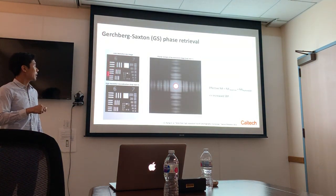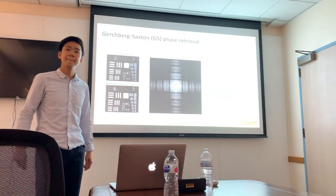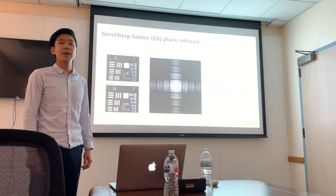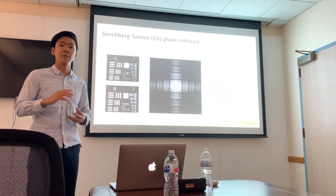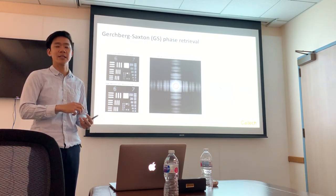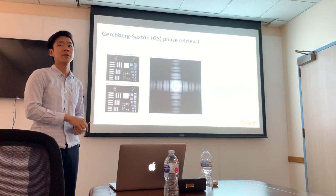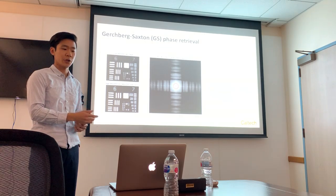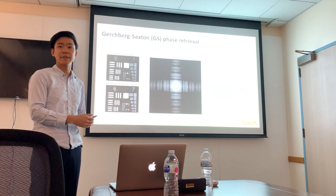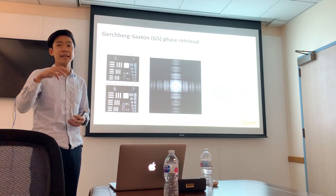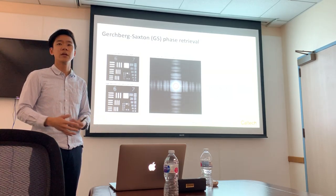FPM uses the Gerchberg-Saxton phase retrieval algorithm — an iterative algorithm to recover both the amplitude and phase of a complex field from intensity-only measurements, given that you have some overlap in the sample's spatial spectrum. A paper by Jay Sun showed that at least 30% overlap in your acquisition pupil ensures you retrieve the lost phase. That 30% threshold was empirically observed and later experimentally demonstrated, though it's highly sample-dependent. For simple images you can probably get away with 30%, but for a much more complex sample that is dense in its Fourier spectrum, it may not converge as well. This is also a hard algorithm to analyze theoretically.